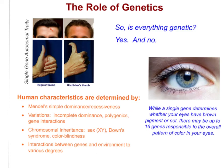So is everything genetic? Well, yes and no. We talked about things that are not heritable. Human characteristics are determined by a number of things. Beyond Mendel's simple dominance and recessiveness, there are other modes of inheritance we'll cover in this unit: incomplete dominance, polygenics, and gene interactions, as well as chromosomal inheritance, sex-linked inheritance, X and Y chromosomes, Down syndrome, colorblindness, and interactions between genes and the environment.